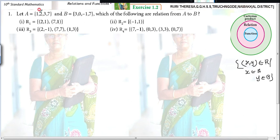So, 2 is an element of A, 7 is also an element of A. But is 1 an element of B? No. So it does not belong to A cross B. Even though it belongs to R1, it does not belong to A cross B, so it is not a relation.